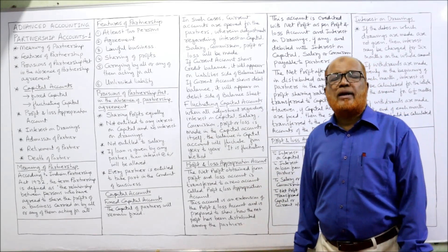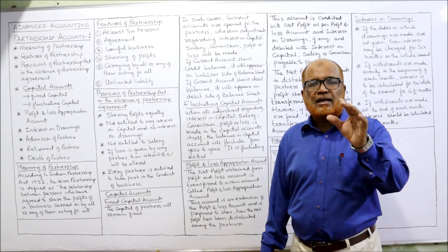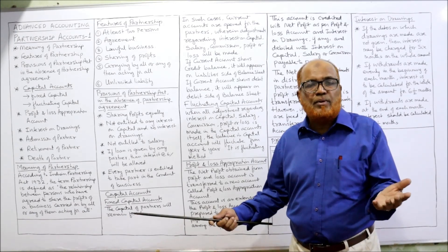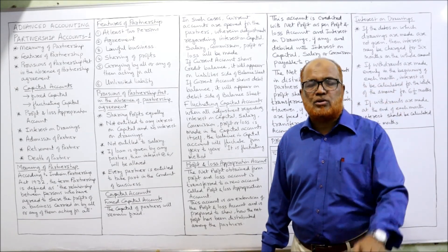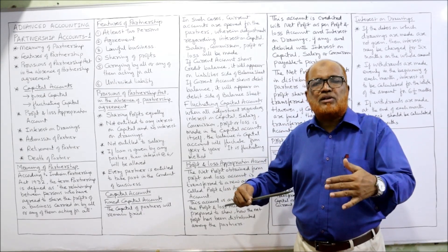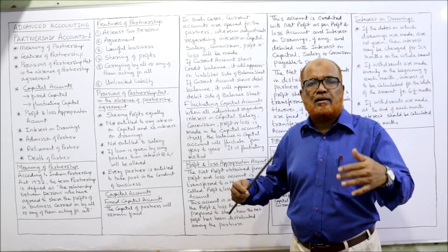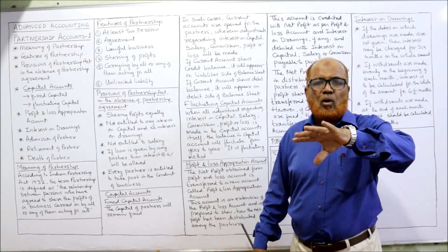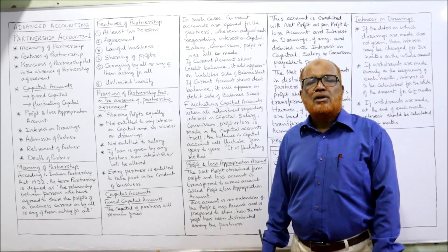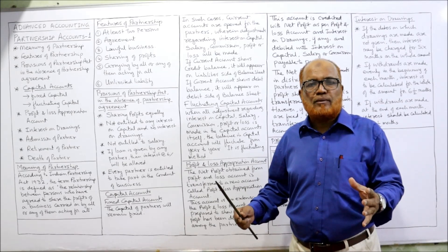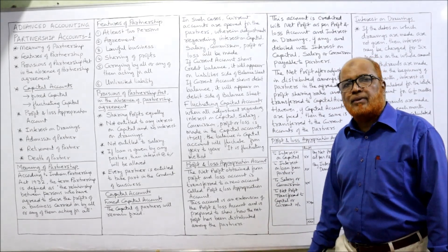The second method is the fluctuating capital method. In this method, the capital at the beginning and at the end of the year will not be the same. Only one account is opened — the partner's capital account — with no current account. All adjustments regarding interest on capital, interest on drawings, salary, commission, and share of profit will be done in the capital account itself, so the capital account will change during the year. That is called the fluctuating capital method.